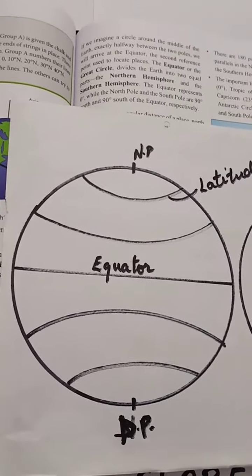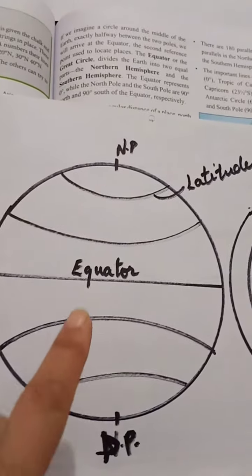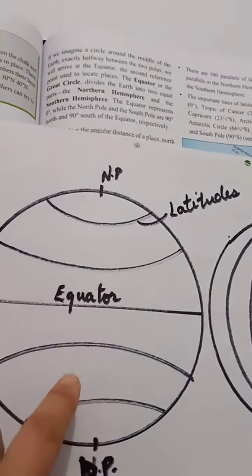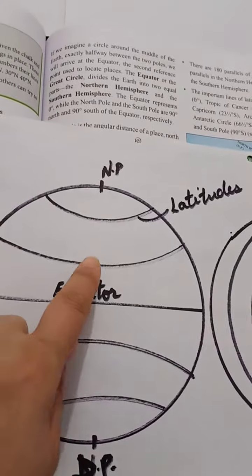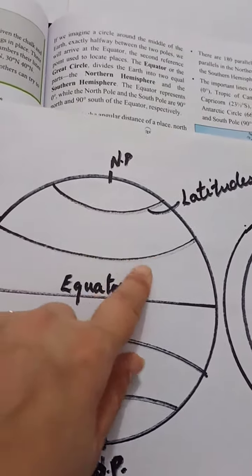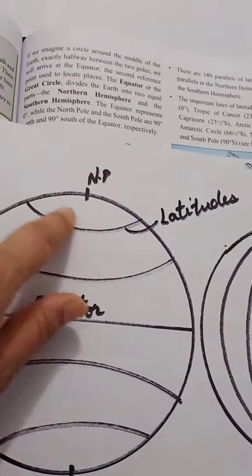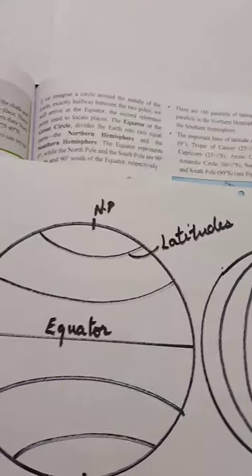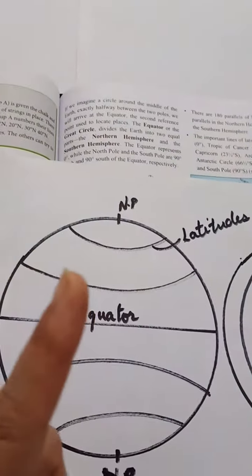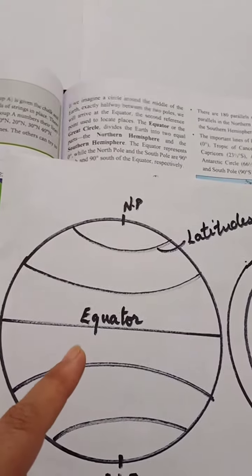Now students, I have also told you to draw this type of diagram. These are the latitudes — I have drawn them very far apart, but these latitudes are not actually so far away. They are very, very close to each other. There are many latitudes, and they are only 1 degree apart from each other.